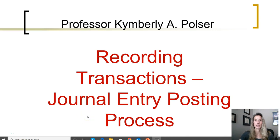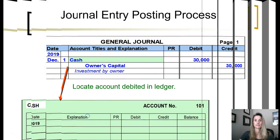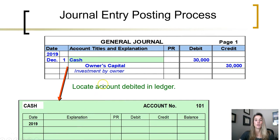In this episode, we are going to look at the process of posting a journal entry. Remember, a journal entry created in the general journal is the original book of entry into the accounting system. The journal entry tells the accounting system what accounts need to be changed as a result of a transaction.